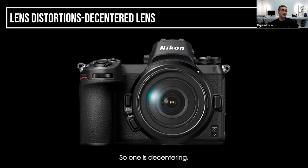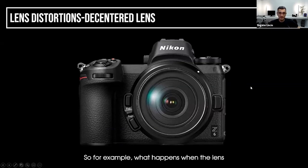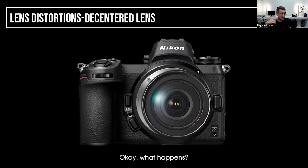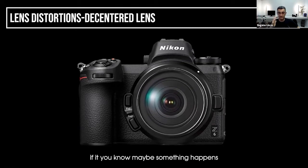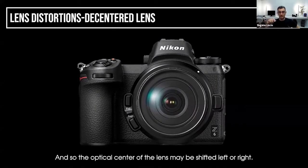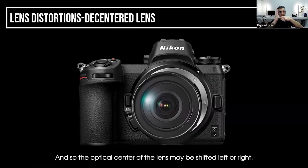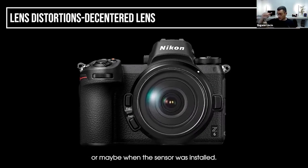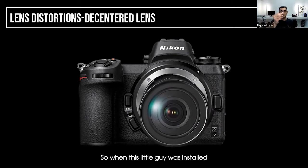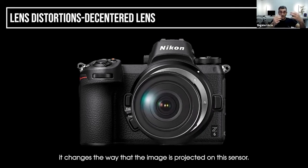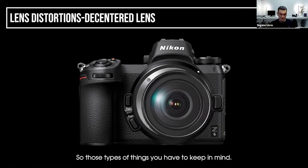There are other types of distortion. One is de-centering. What happens when the lens is not centered — if there's a slight shift, maybe from impact or manufacturing variation? Not all lenses are manufactured 100% identically, so the optical center of the lens may be shifted left or right. That could be why the image is not perfectly centered. Or maybe when the sensor was installed, if it's off left, right, up, or down by just a fraction of a millimeter, it changes the way the image is projected on the sensor.